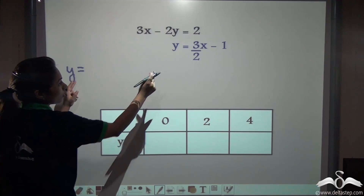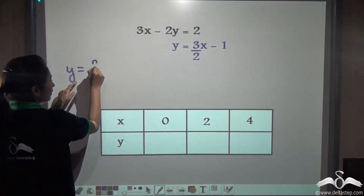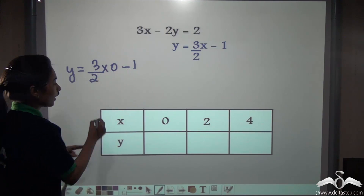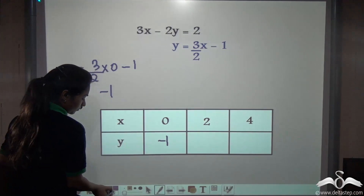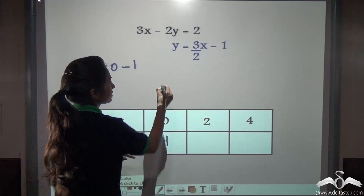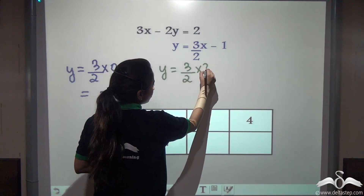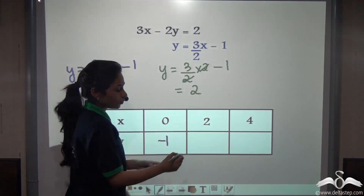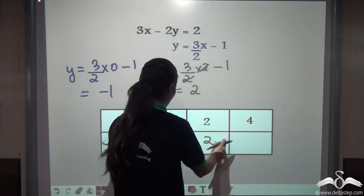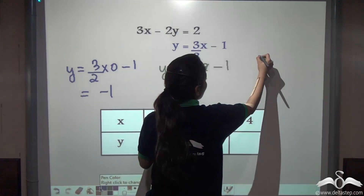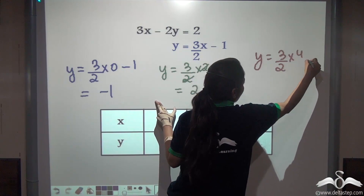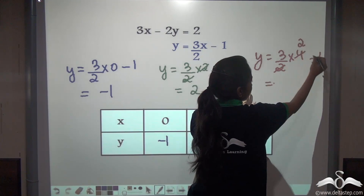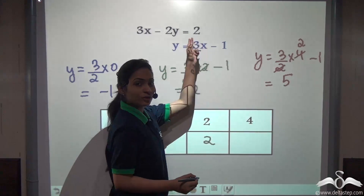Substituting x = 0: y = (3/2)(0) − 1 = 0 − 1 = −1. For x = 2: y = (3/2)(2) − 1. The 2s cancel, giving 3 − 1 = 2, so when x is 2, y is 2. For x = 4: y = (3/2)(4) − 1. The 2 and 4 simplify to give 3 × 2 = 6, and 6 − 1 = 5, so when x is 4, y is 5.